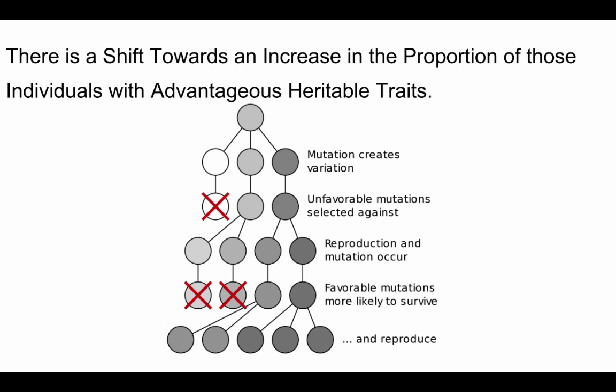The next concept is the shift towards an increase in the proportion of individuals with advantageous heritable traits. When individuals have offspring through sexual reproduction, those offspring are not identical to the parents. Parents will, on average, pass on the favorable traits they had, but there is still going to be some variation. As those with unfavorable traits die off and those with favorable traits survive, we tend to see shifts within the population towards a higher percentage of favorable traits. There will still continue to be variation — it's just a shift towards on average having the better traits.